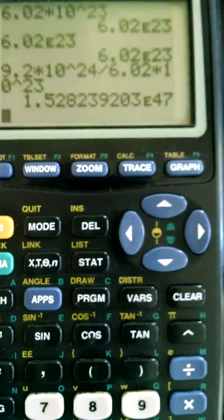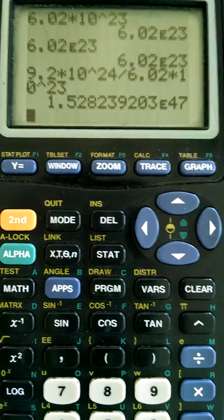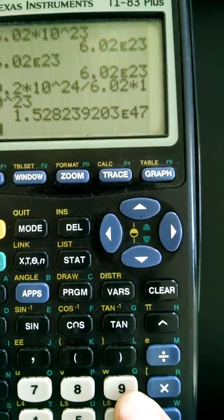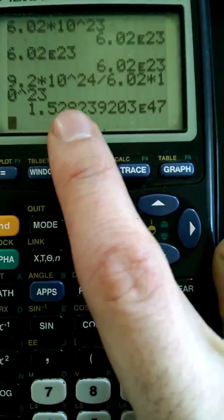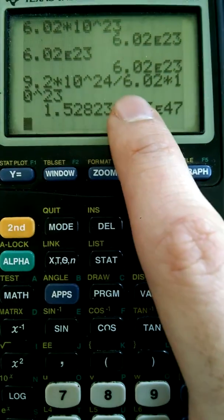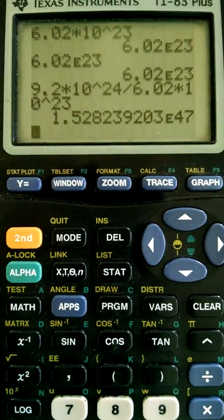All right, never write an answer that has times 10 to the 47th in this class. You're going to be wrong. And again, your work is probably right, like if you write it down. But the only reason your answer is wrong is because you didn't put parentheses around the 6.02 times 10 to the 23rd.